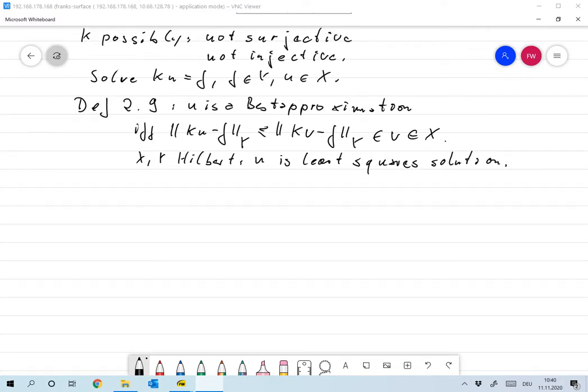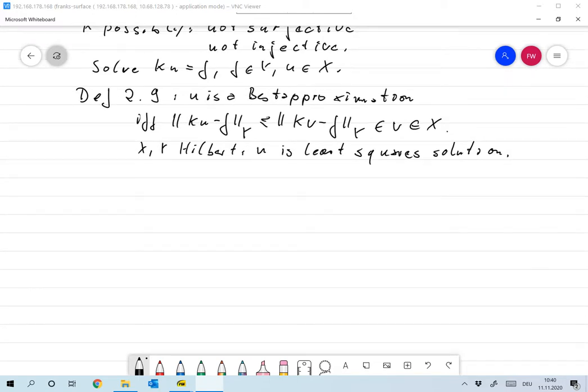But since it's not unique, we already saw in the finite dimensional case how this can be treated if the operator is not injective. So this is the first one handles not surjective. The second one handles not injective.